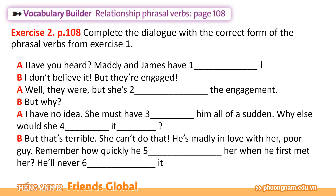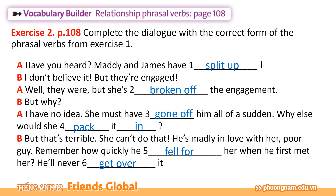Now let's take the phrasal verbs from exercise number 1 to complete the dialogue in exercise number 2. Remember to use the correct form of the phrasal verbs. Chúng ta cùng dùng những cụm động từ ở bài tập số 1 để hoàn thành đoạn hội thoại giữa A và B: 'Have you heard? Mandy and James have split up.' 'I don't believe it — but they're engaged!' 'Well, they were, but she's broken off the engagement.' 'She must have gone off him all of a sudden. Why else would she pack it in?' 'He's madly in love with her. Remember how quickly he fell for her? He'll never get over it.'